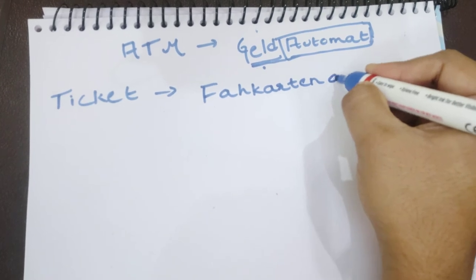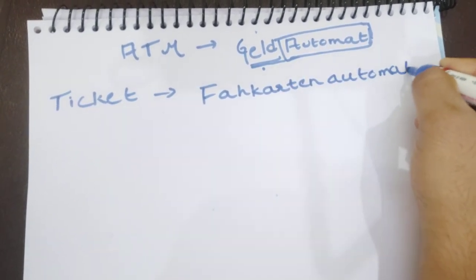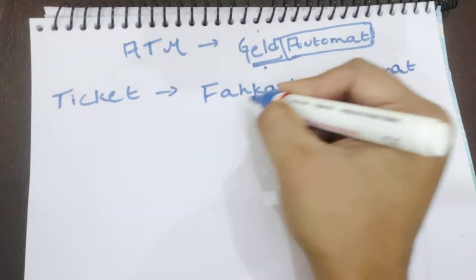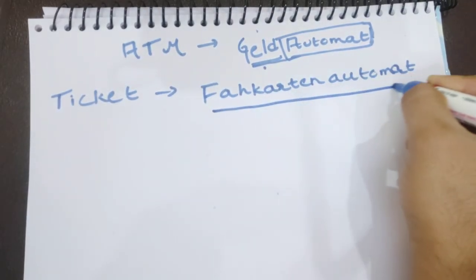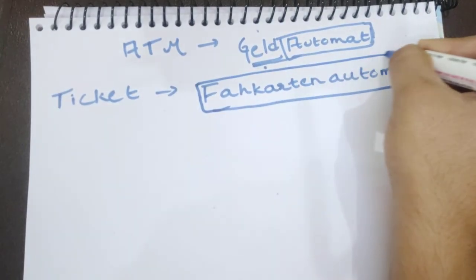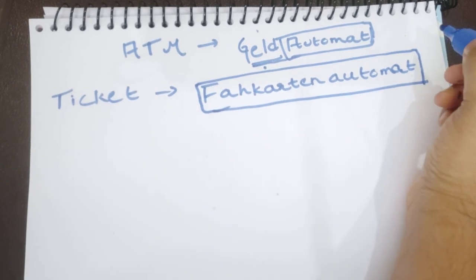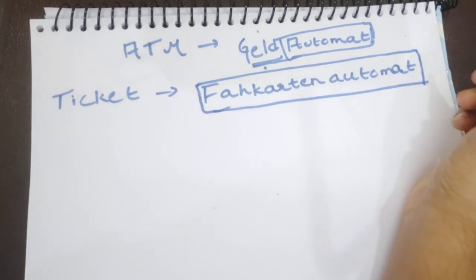Fahrkarten Automat is the ticket machine. This is quite a long word in German. You can see the difference between these automated machines.